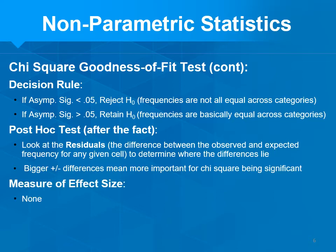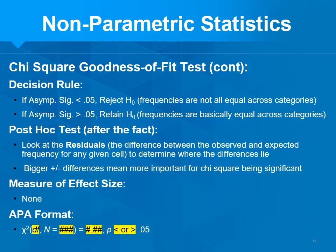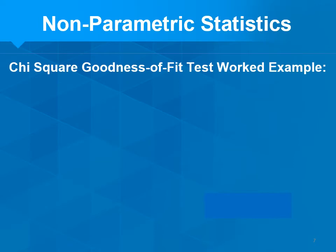Your measure of effect size is none. APA format for chi-square includes: chi-square, degrees of freedom, sample size, then the chi-square value rounded to two decimals, and you pick P less than or greater than 0.05 based on the asymptotic sig.